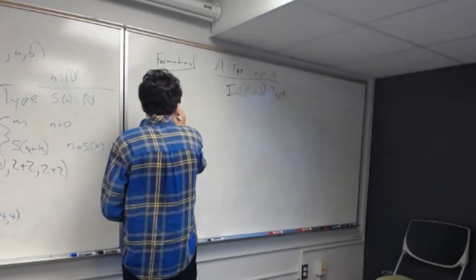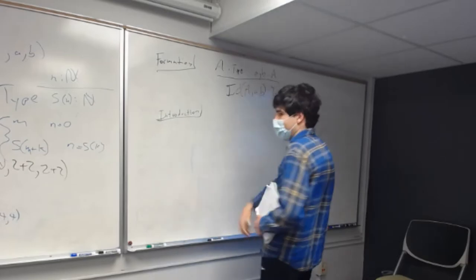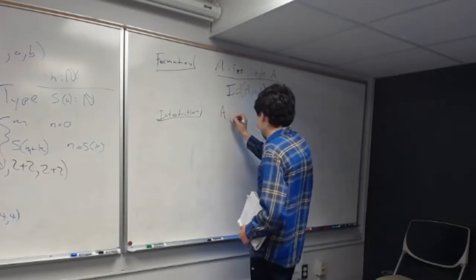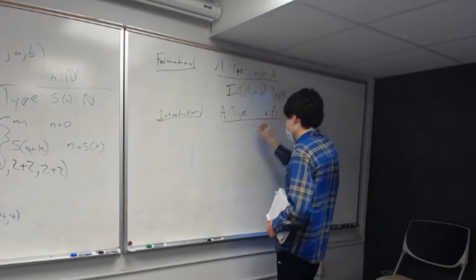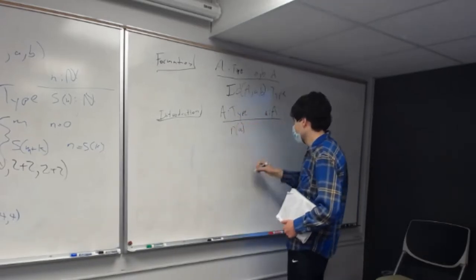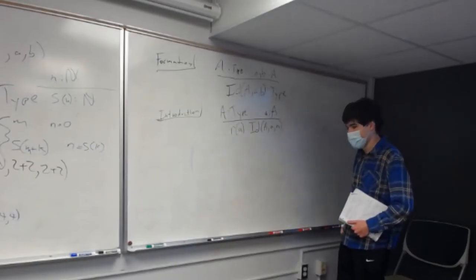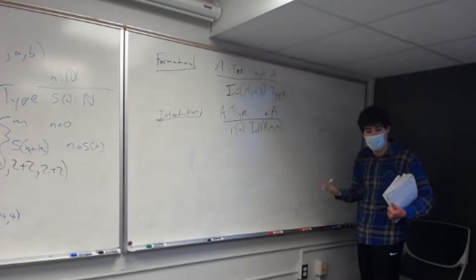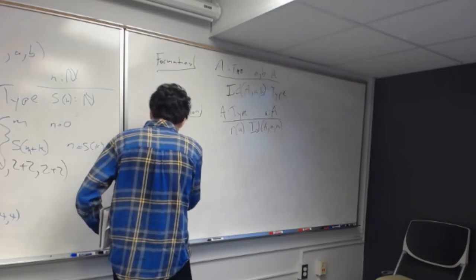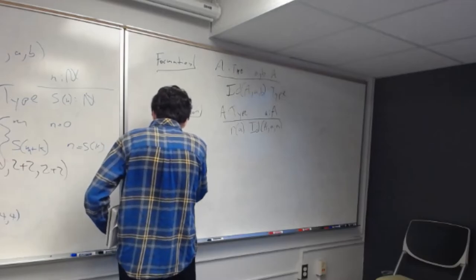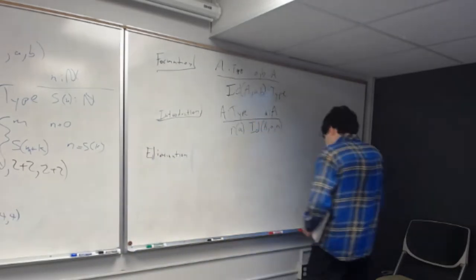Introduction: this is the identity rule involving the reflexive property. Given a type A and a little a in A, there ought to be a reason why a is equal to itself - we call this R(a), of type I(A, a, a). The formation and introduction rules are relatively easy; the next two are more sophisticated.